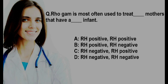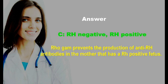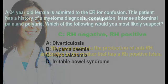RhoGAM is an anti-D immunization. In cases of Rh incompatibility, it is administered within 72 hours after delivery. The answer is option C: Rh negative mother and Rh positive infant, because RhoGAM prevents the production of anti-Rh antibody in a mother that has a Rh positive fetus.